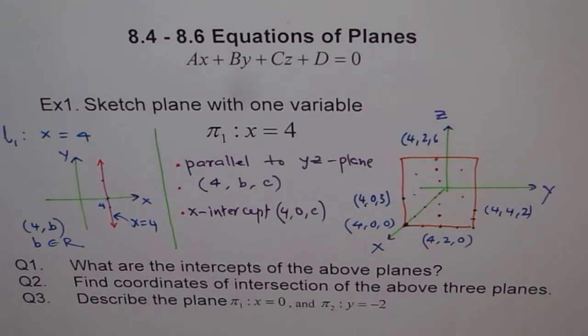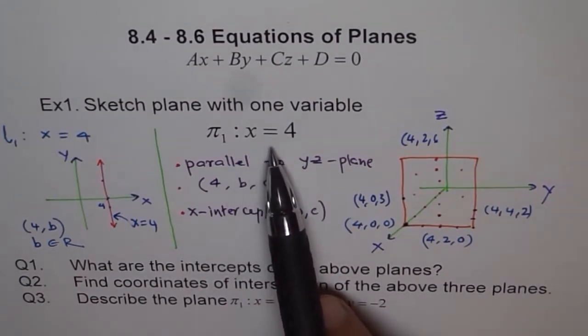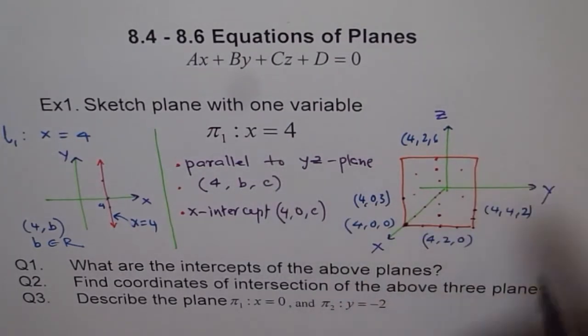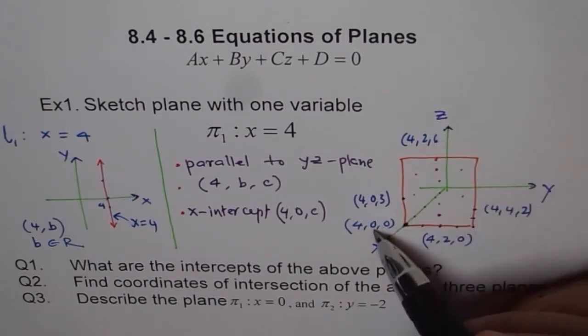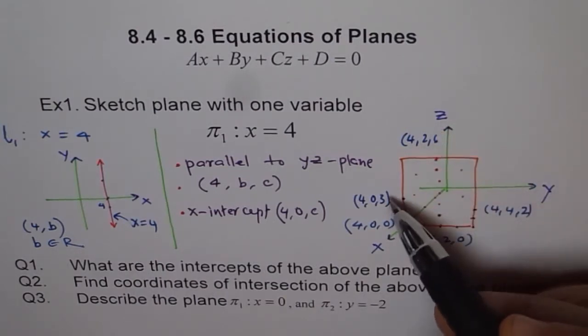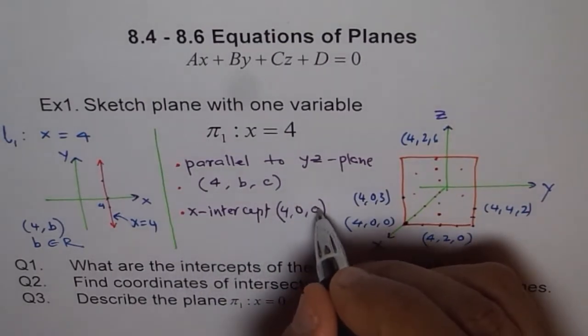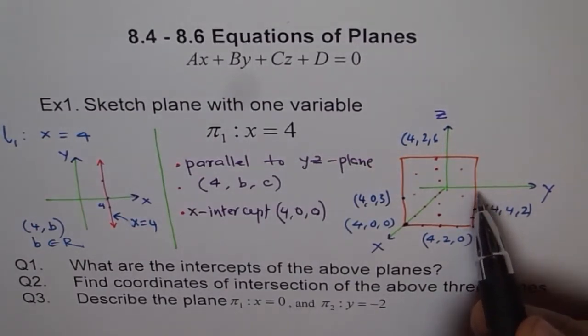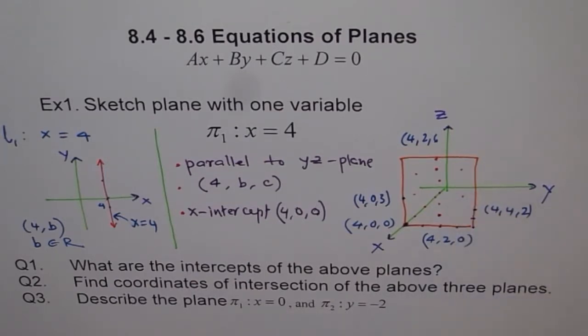I think you got fairly good idea of how a plane with one variable should look like. If instead of x equals four, I write y equals four, then what will happen? y equals four will be a plane like this. Do you see? It will be parallel to zx-axis. So it will be a plane like this, parallel to zx-axis with y-intercept as zero, four, zero. And any point on plane y equals four will be a, four, z. Do you understand? That is how you have to look into planes which have only one variable.